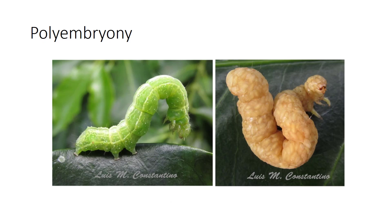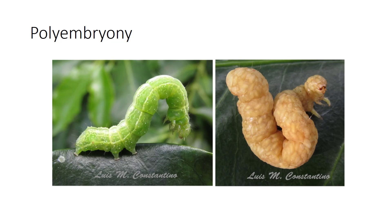Polyembryony is found only among parasitoids — a single egg may divide to form new eggs, which all develop into larvae. As many as 1,500 embryos in a single caterpillar have been counted after oviposition by a female encyrtid. Some encyrtids lay two types of eggs: defender morphs hatch first and seek out and destroy any larvae already present in the host, but fail to pupate and die. The second type, reproductive morphs, hatch later and complete development. In conclusion, predators, parasites, and parasitoids use a variety of techniques to find, accept, and manipulate hosts.